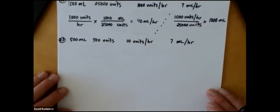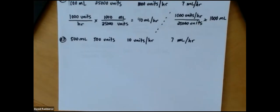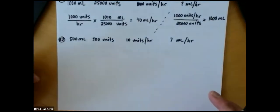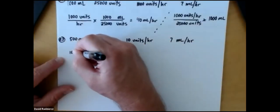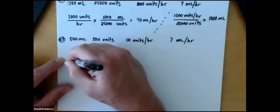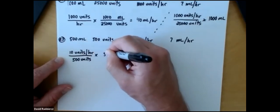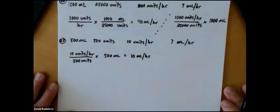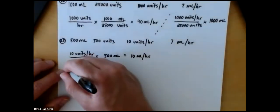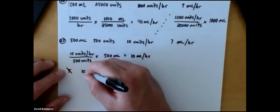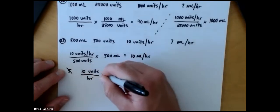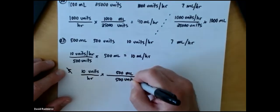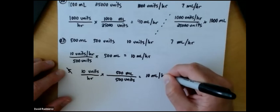I'm going to show you the same thing with the insulin. I'll do the ordered-over-available setup first, then I'll reverse it and do the dimensional analysis version. Starting with my units per hour — 10 units per hour — over my available, which is 500 units, times my quantity, which is the 500 milliliters. When I do that, I'm going to get 10 milliliters per hour. Doing it the other way — 10 units per hour times 500 milliliters over 500 units — I'll get the same answer: 10 milliliters per hour.